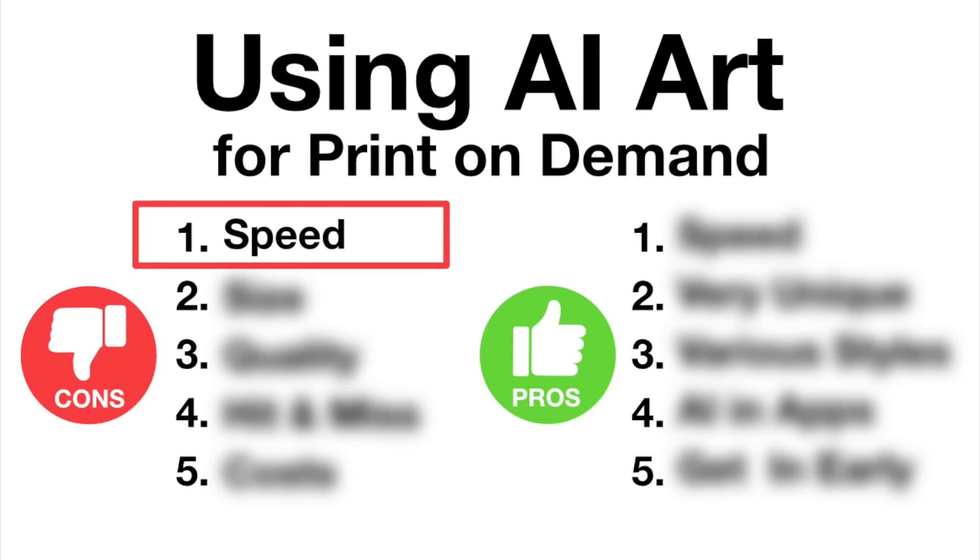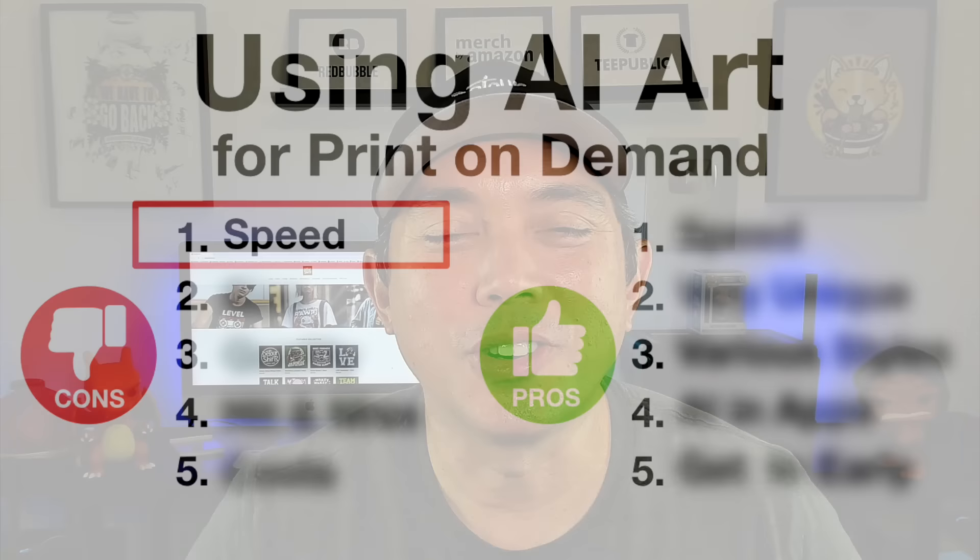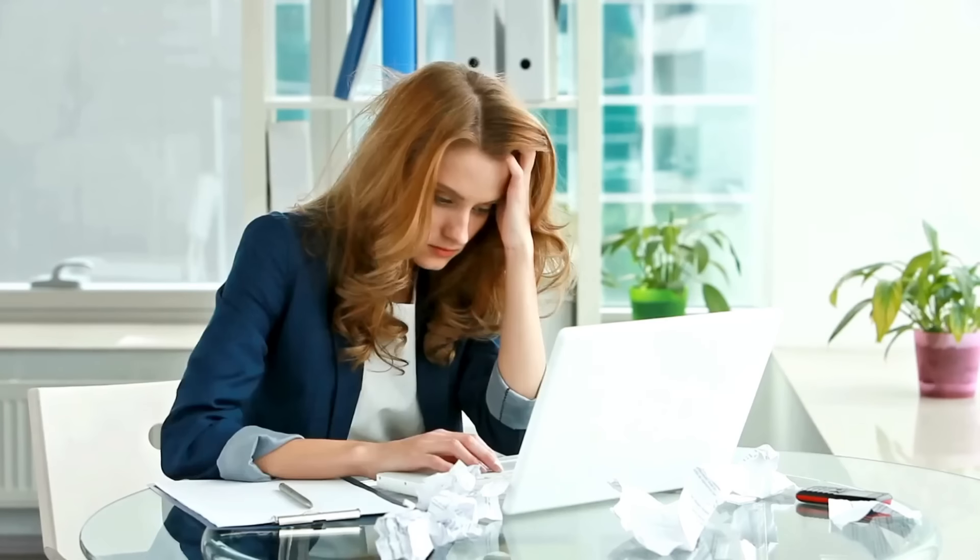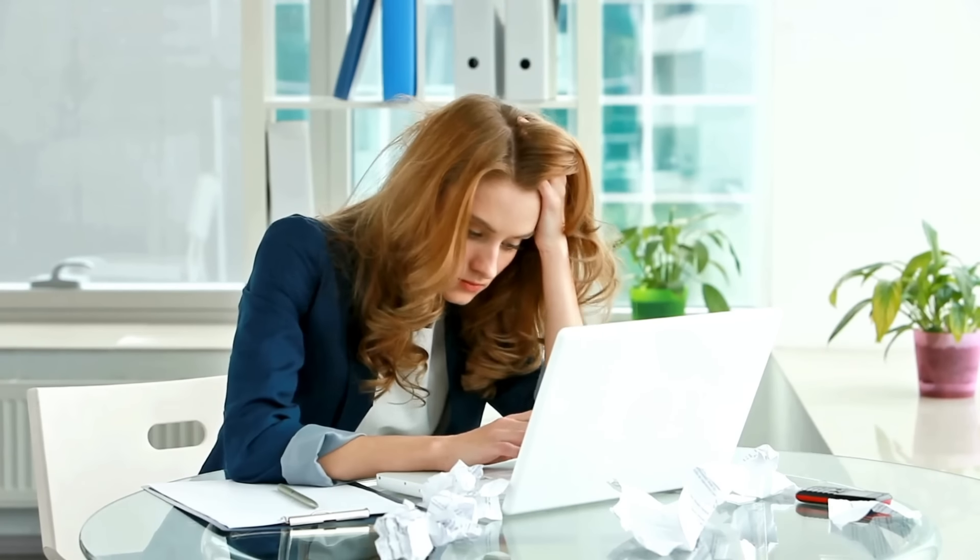The first con is speed. When you think of AI you think you want to use it for speed because it's a lot faster, but it's not as fast as you might think. If you haven't used AI for print on demand yet, you'd probably think all you have to do is create a good prompt, it will create a design for you in seconds, and you can just put it on print on demand products — and that is not true.